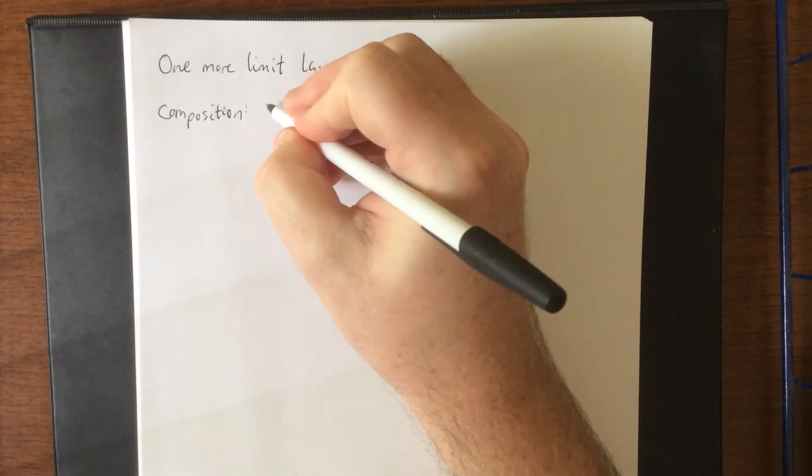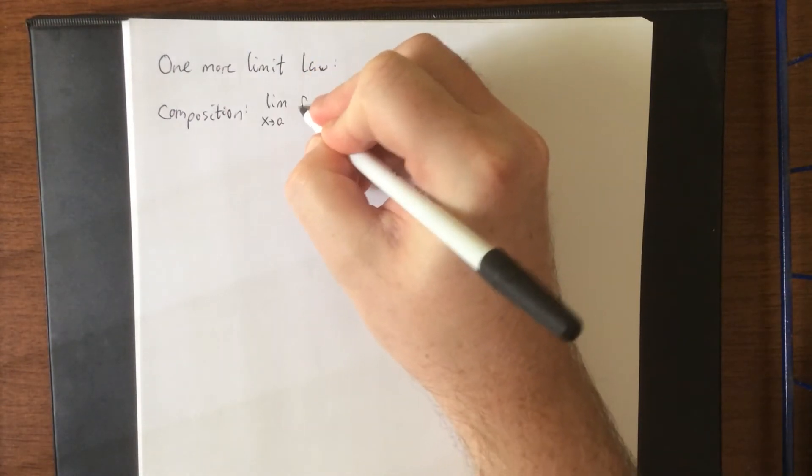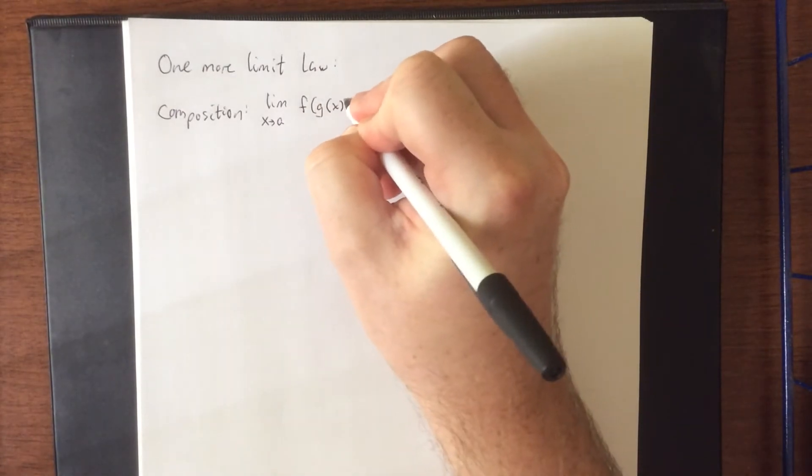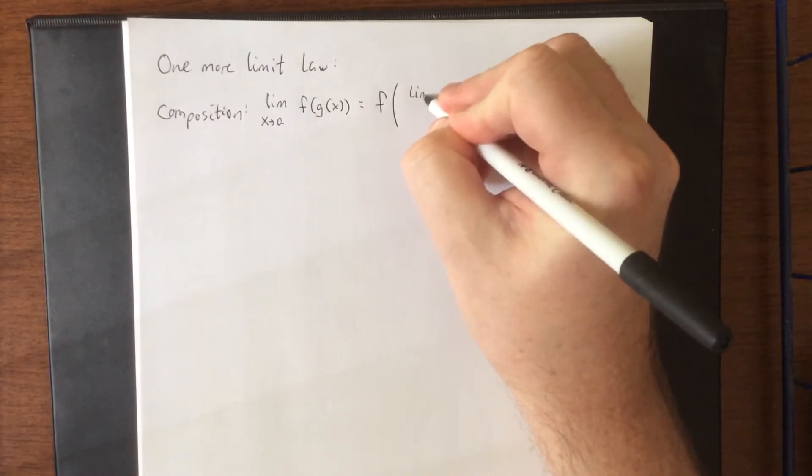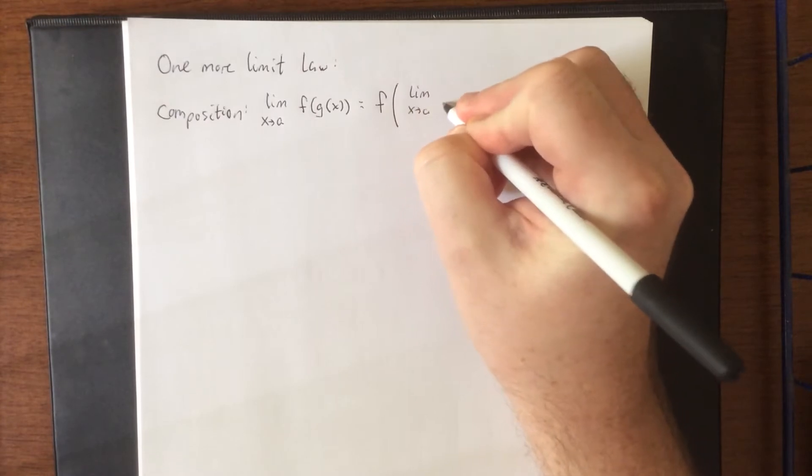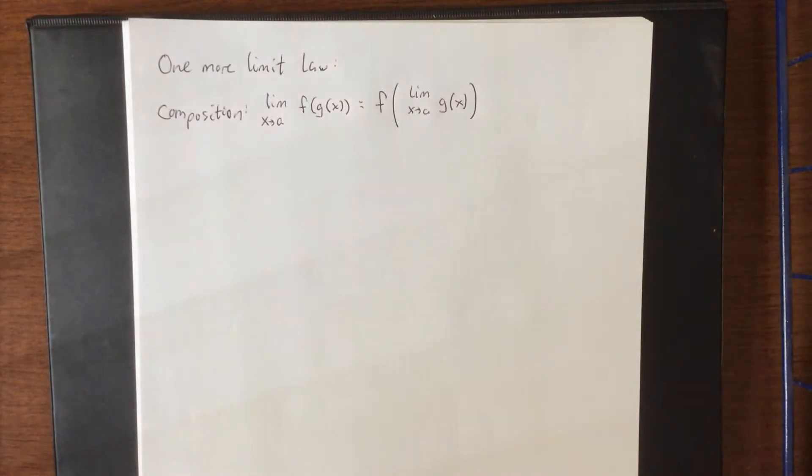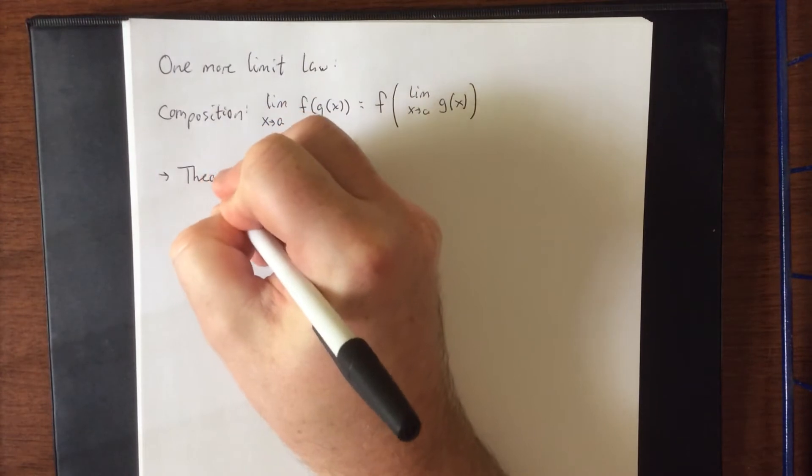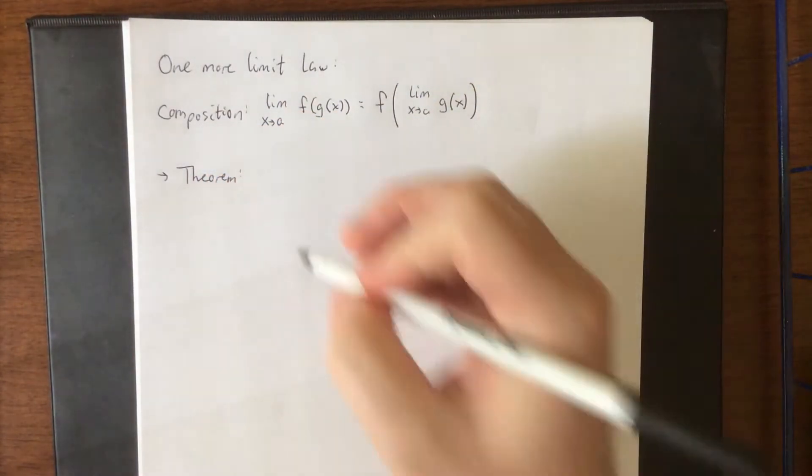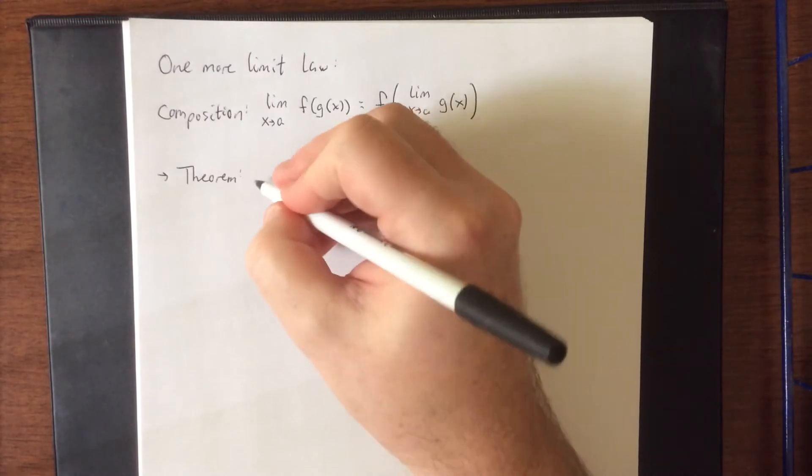If I'm interested in taking the limit as x approaches a of a composition of two functions, then I can move the limit to the inside of the outer function and take the function of the limit as x approaches a of g of x, provided that this limit actually exists. Now this allows us to extend our concept of continuity to include domains of functions.